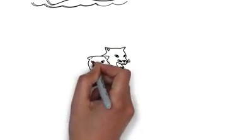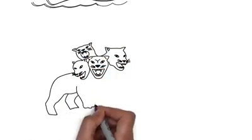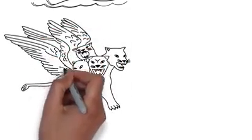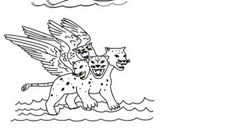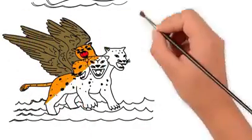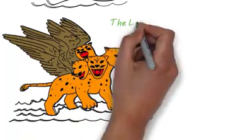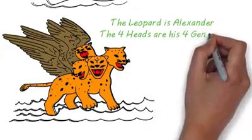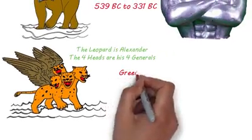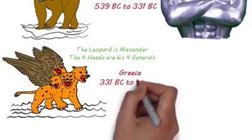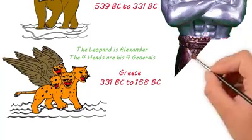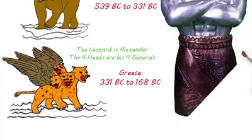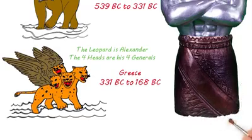The third beast is a leopard having four wings and four heads. The leopard represents Greece led by Alexander the Great. The wings represent the speed which young Alexander conquered the world. The four heads of the leopard represent Alexander's four generals: Cassander, Lysinicus, Seleucus, and Ptolemy. After Alexander's death, these four generals divided the kingdom and fought amongst themselves for control of Alexander's empire.